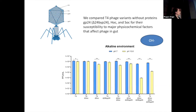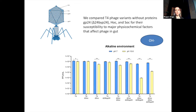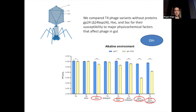Moving to the alkaline environment, we can see that the SOC protein is key to alkaline resistance in these cases. However, we can also note that the lack of GP24 protein makes this sensitivity higher.